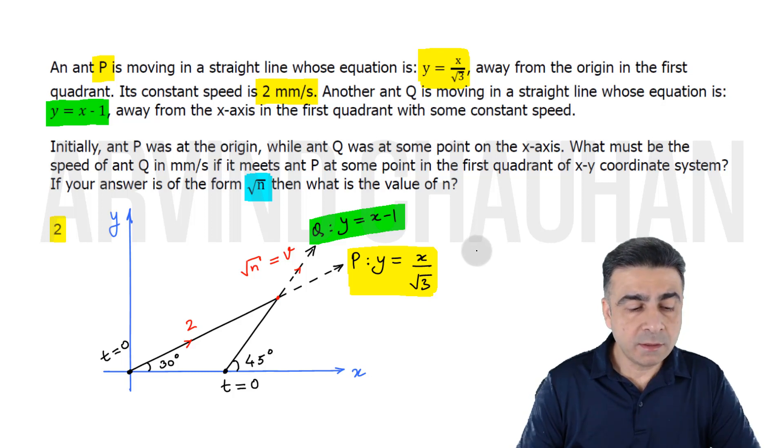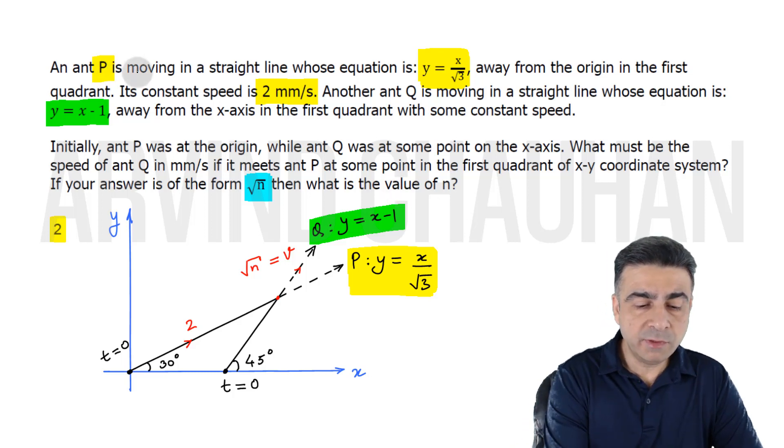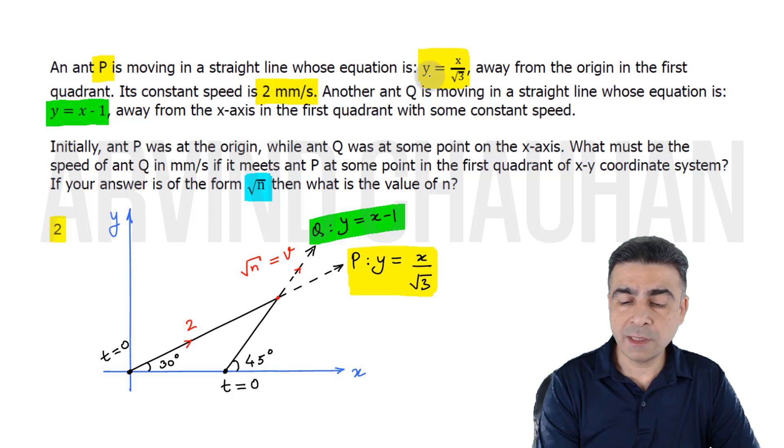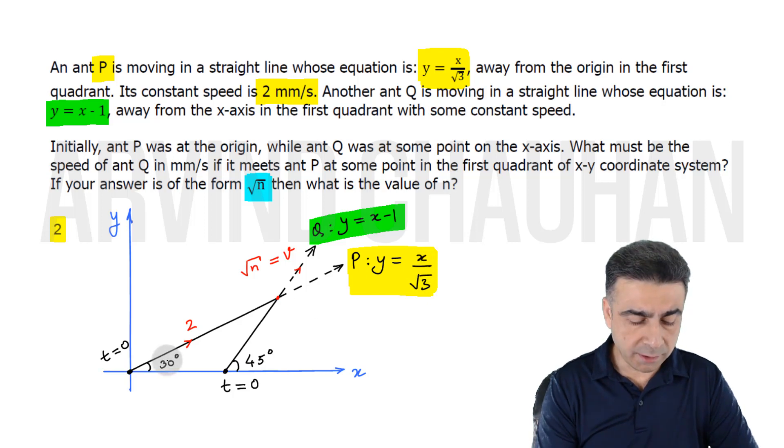In this problem there are two ants, ants P and Q. P is moving in a straight line whose equation is y equals x by root 3. It will have a slope of 30 degrees, away from the origin in the first quadrant. Its constant speed is 2 millimeters per second.